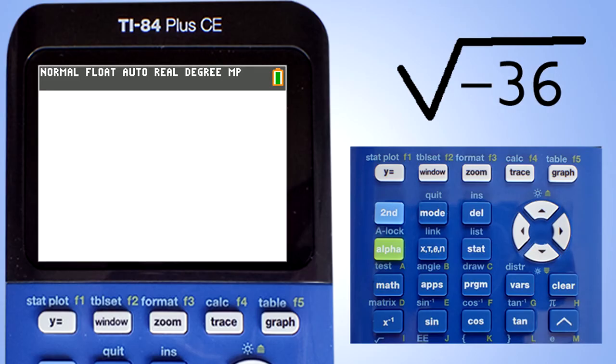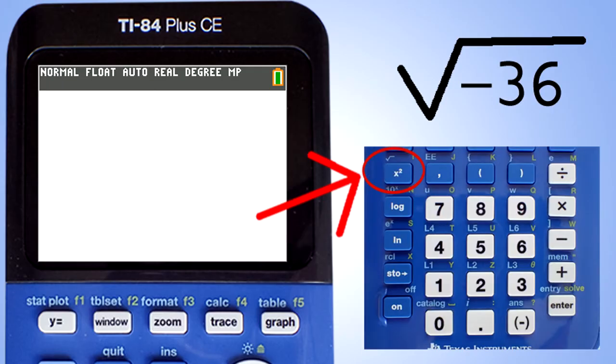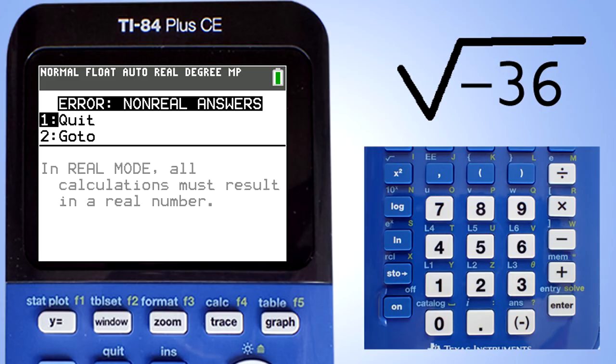The next problem is the square root of negative 36. Press the second button. Then this x squared button which is also the square root button. You know the drill. Enter negative 36 and press the enter key. And we get an error message.